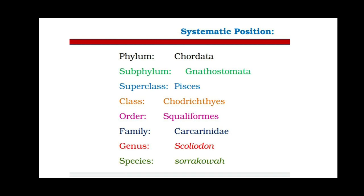The class Chondrichthyes: in sharks the endoskeleton is made up of cartilage, so the endoskeleton is built from cartilage — that's why they are called Chondrichthyes. In contrast, bony fishes have an endoskeleton made from bones.